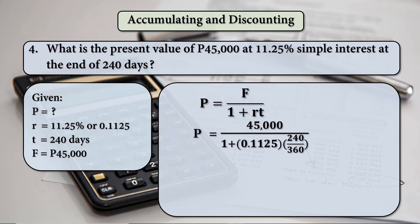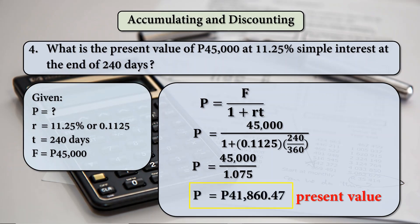Since the time here is not in years, it's 240 days, we have to divide it by 360 using the banker's rule for the value of T. So F is 45,000, 1 plus R is 0.1125 times T, which is 240 days over 360 days banker's rule. That results to 45,000 over 1.075, and 41,860 pesos and 47 centavos is our present value.